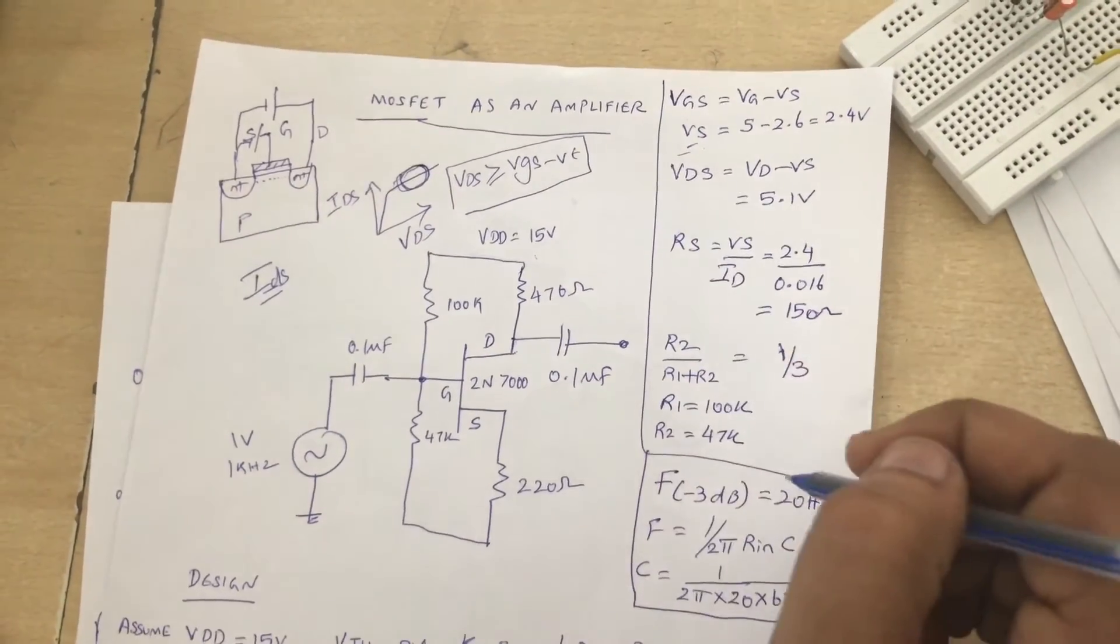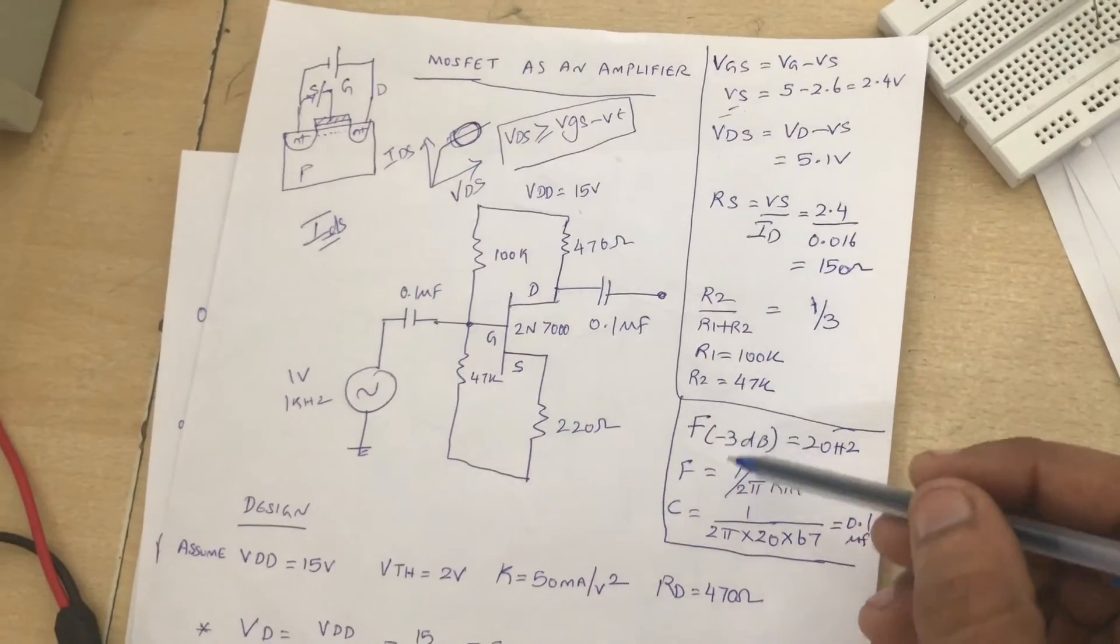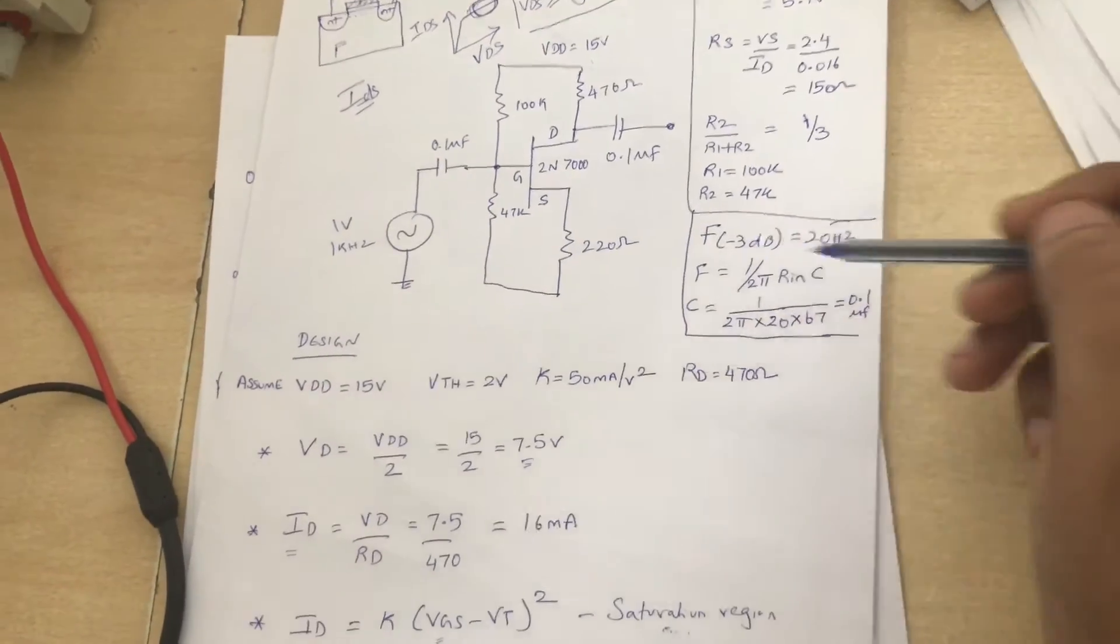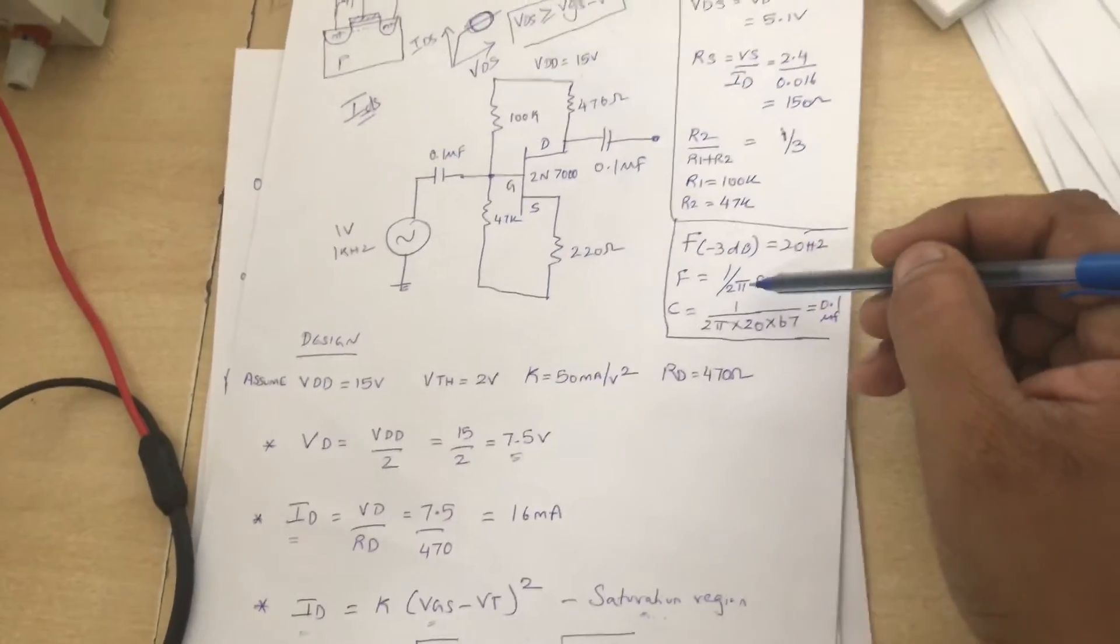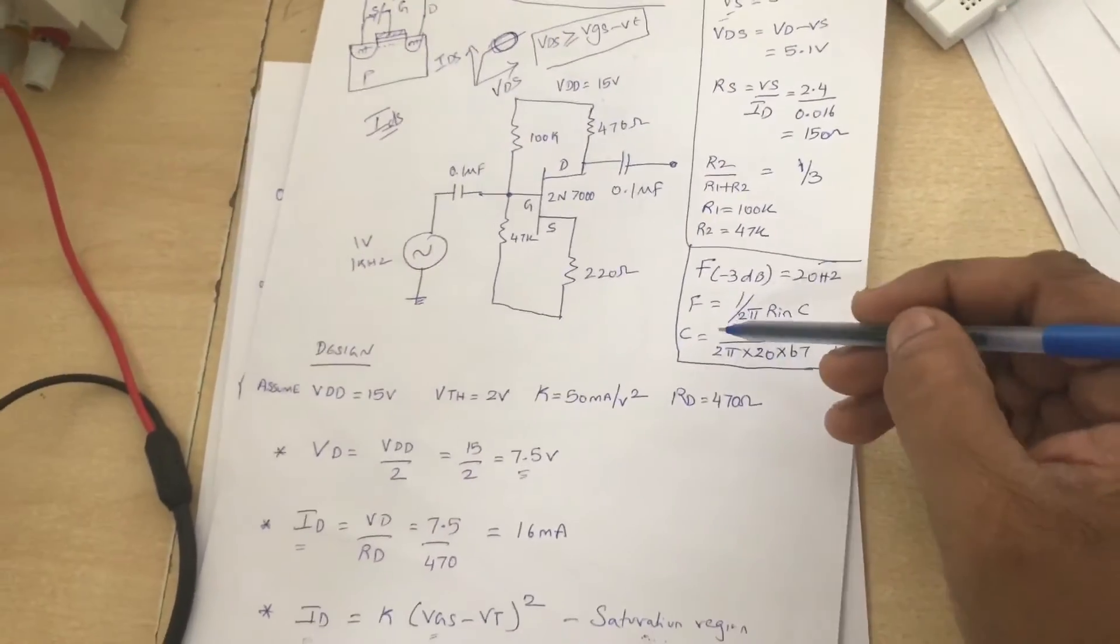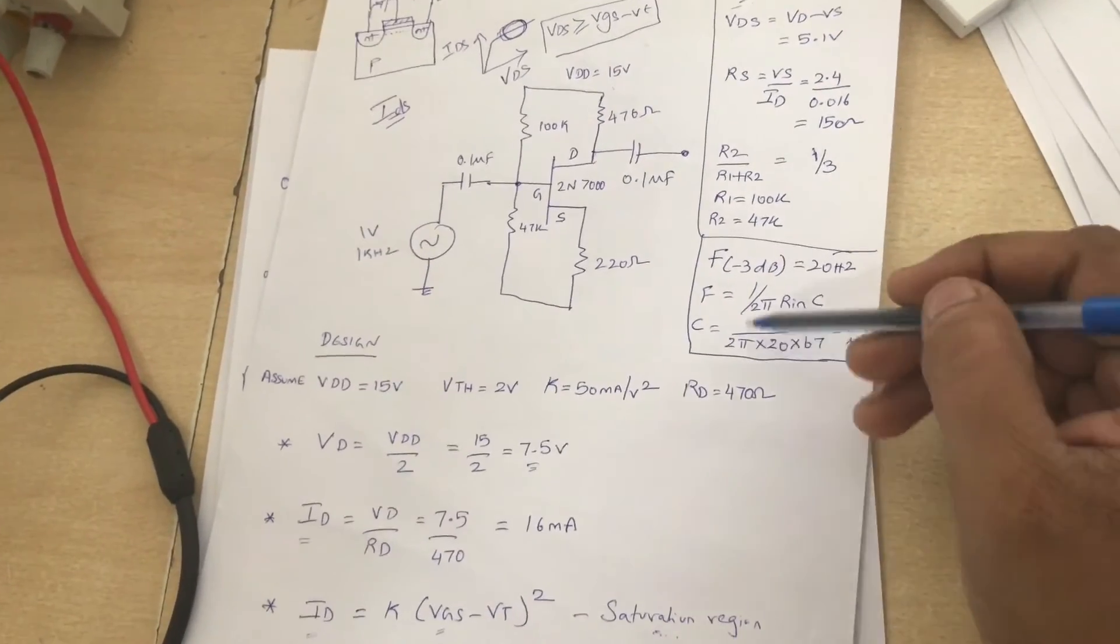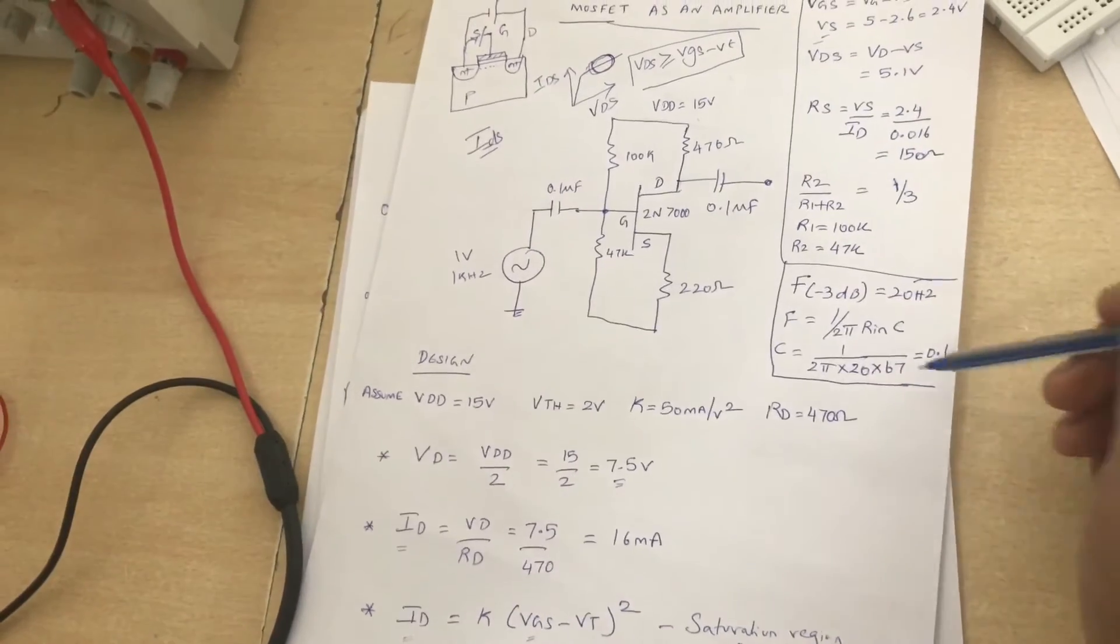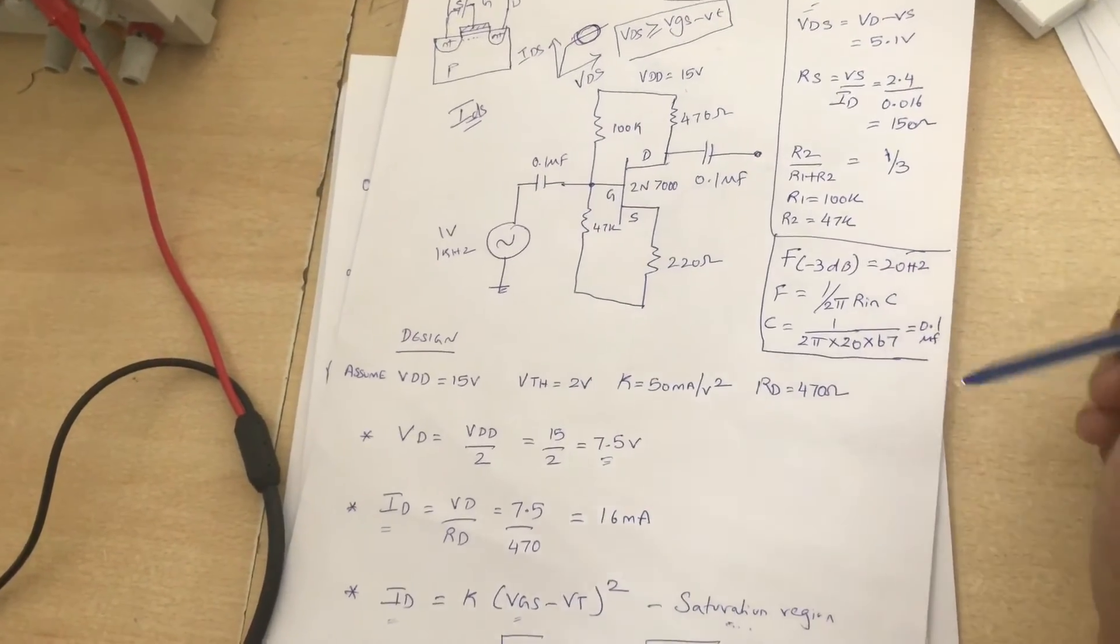Now the frequency we are going to assume as 20Hz as a -3dB cutoff frequency, which comes from F equals 1 by (2π R into C). You can calculate C given the value of F and R, where R is nothing but R1 parallel to R2. So C can be calculated as 0.1 microfarad.